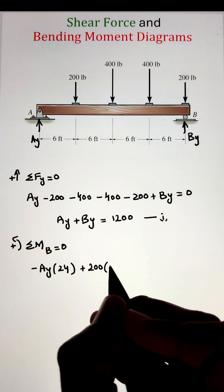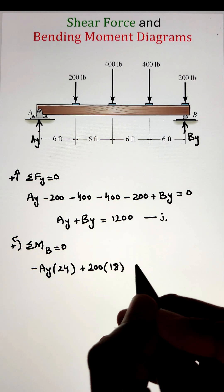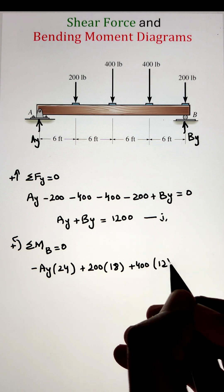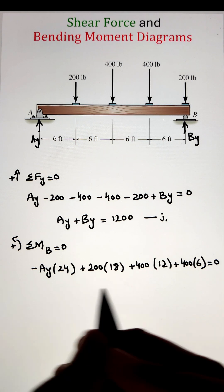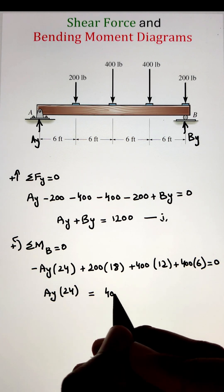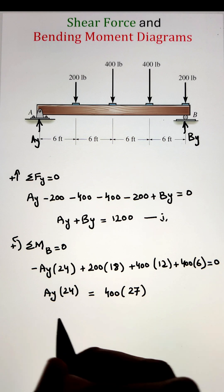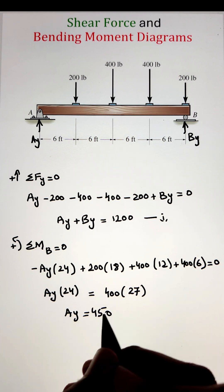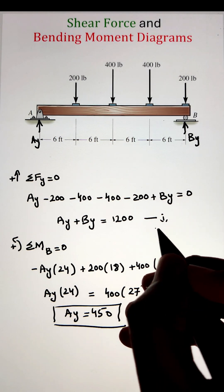Next, the second equilibrium equation can be written as summation of moment at point B equals to 0, taking counterclockwise as positive. Our resultant value of Ay is coming 450. Now, plugging in the value of Ay into equation 1, we can get the By of 750 pounds.